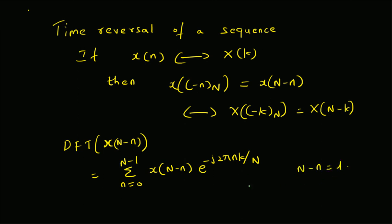Now this is x[N-n], so let us call N-n the new variable l. When n=0, l=N, and when n=N-1, l=1. So l has limits from 1 to N, and the expression becomes summation of x[l] times e^(-j2π(N-l)k/N).